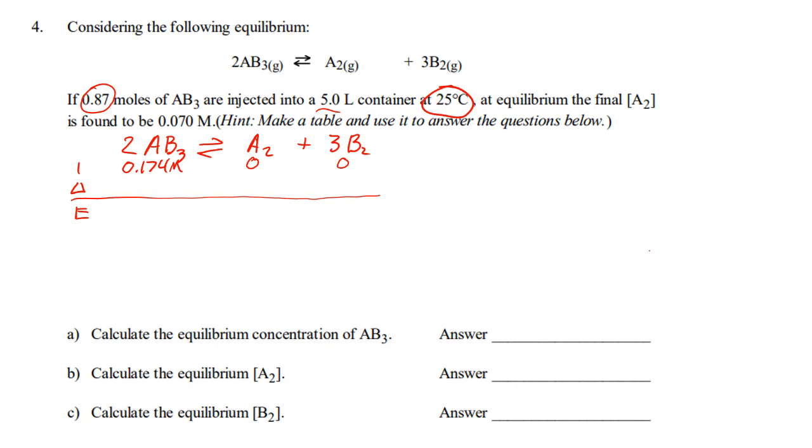Now, at equilibrium, the final concentration of A2 is 0.07 molarity. Now, it gives in to me molarity, so I do not have to divide by 5. Okay. If it gave in to me in moles, I would have to divide by 5, but it gives it to me in molarity.